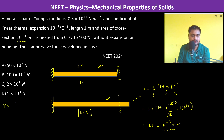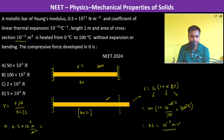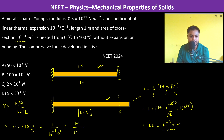Using the Young's modulus formula Y = (F/A) / (ΔL/L): Y is 0.5×10¹¹ N/m², A is 10⁻³ m², L is 1 meter, and ΔL is 10⁻³ meters. Substituting these values to solve for force F.